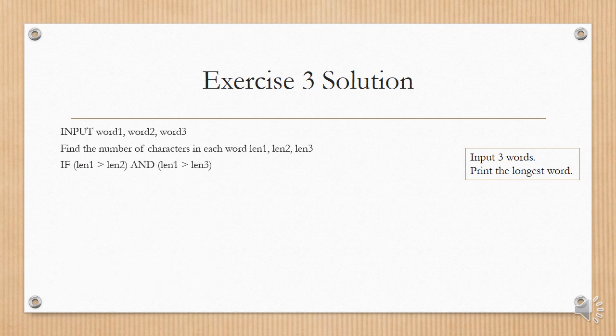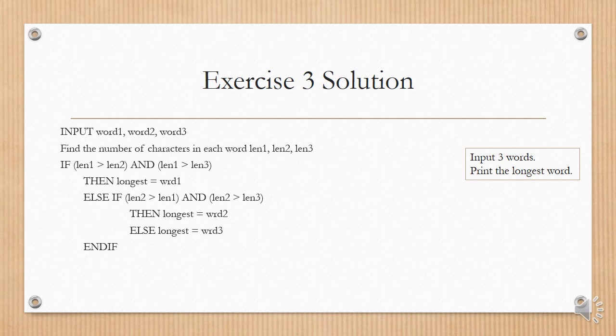If len1 is greater than len2, and len1 is greater than len3, then the longest word is word 1. We set longest gets assigned word 1. Else, this is a nested else, if len2 is greater than len1, and len2 is greater than len3, then the longest equals word 2. Else, longest equals word 3. And then we end the IF, and we end the outer IF.